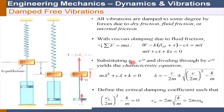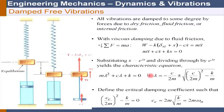With x'' = λ²e^(λt), substituting and noting e^(λt) cannot be zero, we divide for a non-trivial solution to get the characteristic equation. This has two roots. We then define a critical damping coefficient cc such that the discriminant of the characteristic equation equals zero.